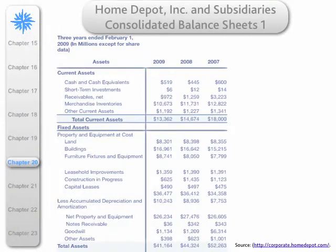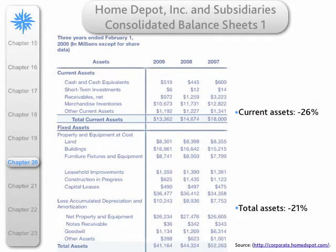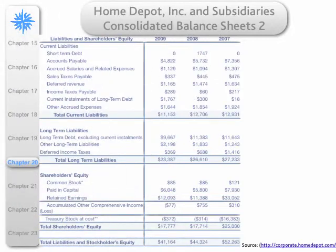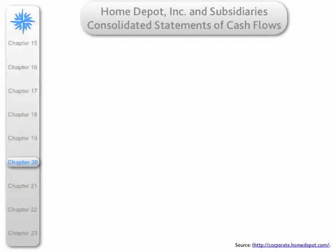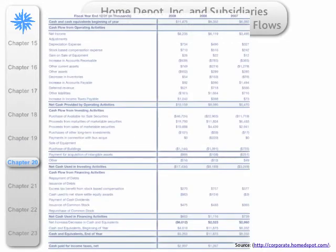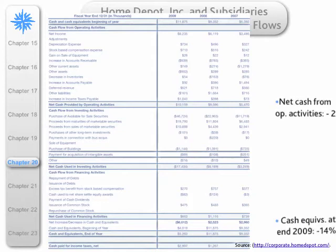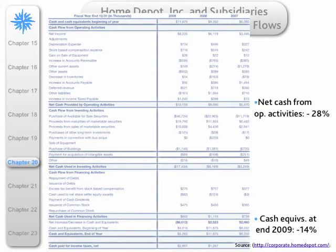The balance sheet is divided into two parts because of space. Here is how the assets have behaved — down. And here is how the liabilities and shareholders' equity have behaved — again down, as you would expect. And finally, we have the cash flow statements, and once again things are negative.